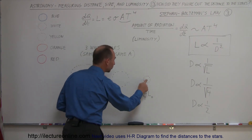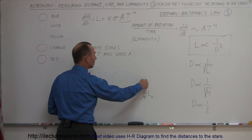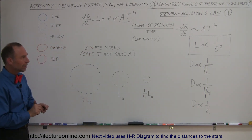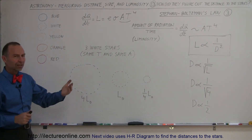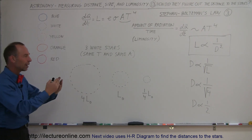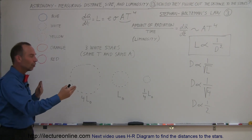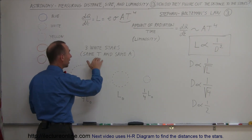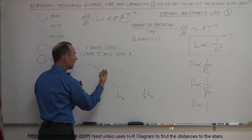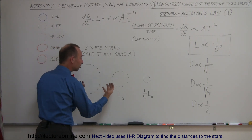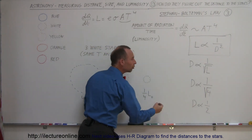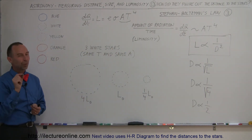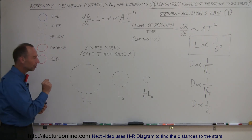That star must be four times as far as the first star. So by knowing the relationship between luminosity and distance, if they are all the same size and the same temperature, we can figure out how far they are relative to one another — but we still don't know how far they actually are.